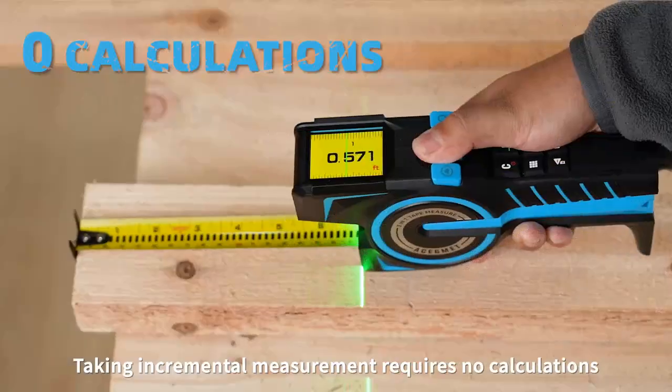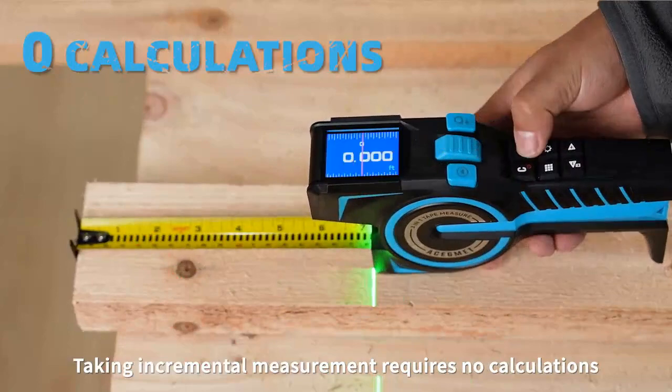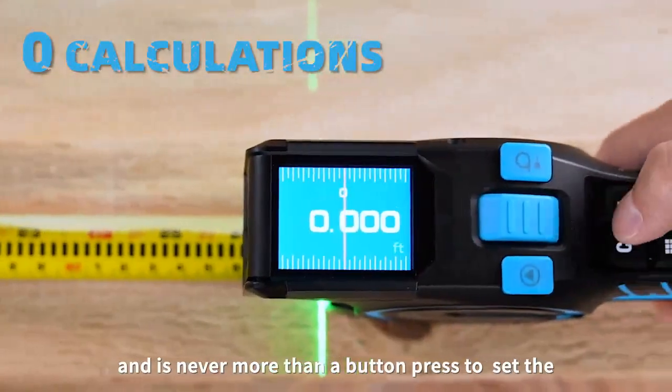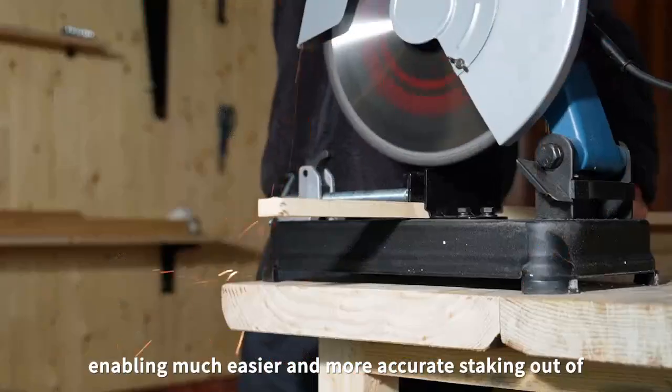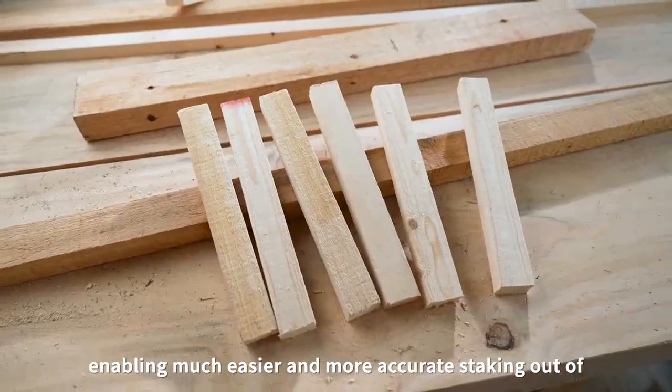Taking incremental measurement requires no calculations and is never more than a button press to set the display number back to zero, enabling much easier and more accurate staking out of a line segment.